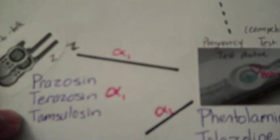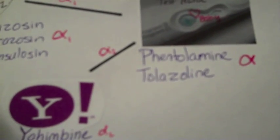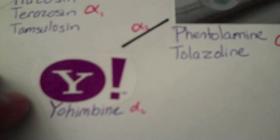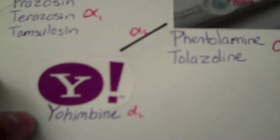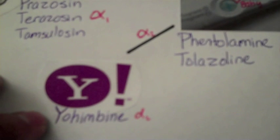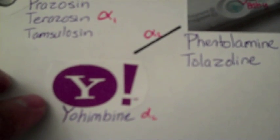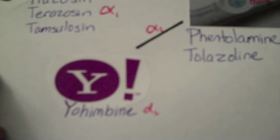For the alpha-1 blockers, there's a picture of a radio that reminds me of push-to-talk. The drugs are prazosin, terazosin, and tamsulosin. For alpha-2, there's yohimbine — I took the Yahoo symbol and stuck yohimbine on it. Yohimbine is often used for erectile dysfunction, and the Yahoo symbol always looked like a happy logo.